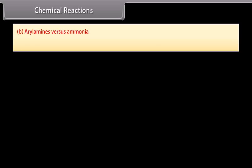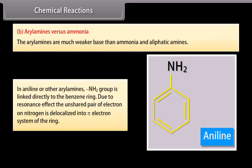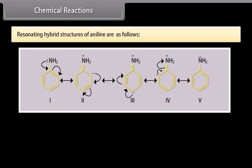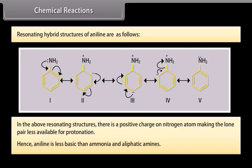Arylamines vs. ammonia: Arylamines are much weaker bases than ammonia and aliphatic amines. In aniline and other arylamines, the NH₂ group is linked directly to the benzene ring. Due to resonance, the unshared pair of electrons on nitrogen is delocalized into the π-electron system of the ring, placing positive charge on nitrogen in resonating structures and making the lone pair less available for protonation. Hence, aniline is less basic than ammonia and aliphatic amines.